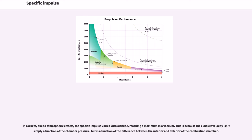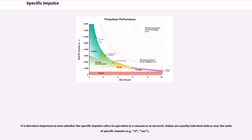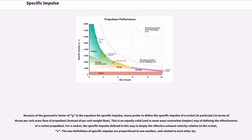In rockets, due to atmospheric effects, the specific impulse varies with altitude, reaching a maximum in a vacuum. This is because the exhaust velocity is a function of the difference between the interior and exterior of the combustion chamber. It is therefore important to note whether the specific impulse refers to operation in a vacuum or at sea level. Because of the geocentric factor of g in the equation for specific impulse, many prefer to define the specific impulse of a rocket in terms of thrust per unit mass flow of propellant, which is simply the effective exhaust velocity relative to the rocket.